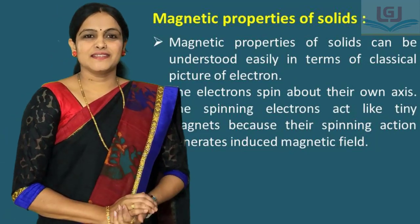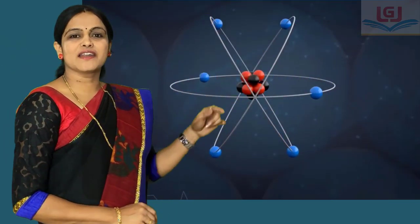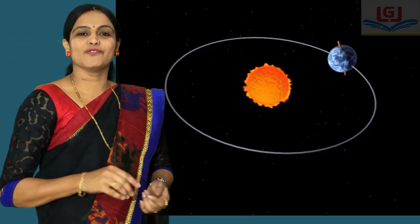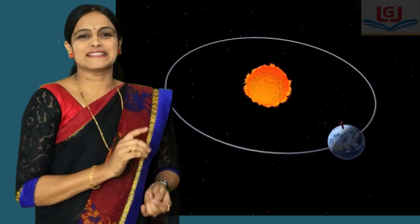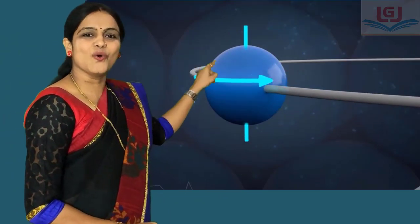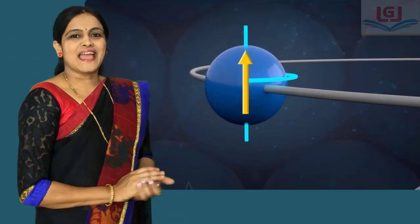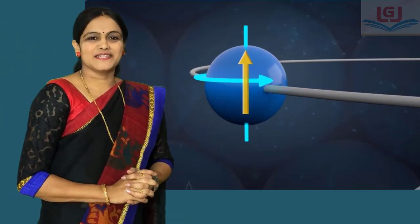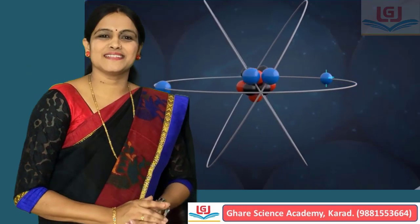We know that electrons are revolving around the nucleus, and at that time they are also revolving around their own axis — just like Earth. Earth revolves around the sun, and at the same time Earth also revolves around itself. Similarly, electrons revolve around the nucleus and also around their own axis. This spinning of electrons acts like tiny magnets and gives rise to a magnetic field. The spinning action of electrons generates induced magnetic fields.